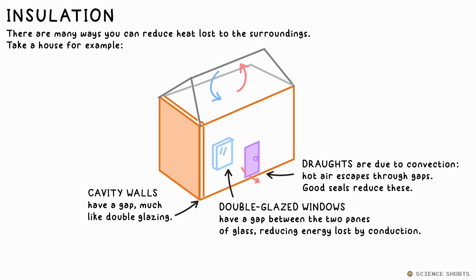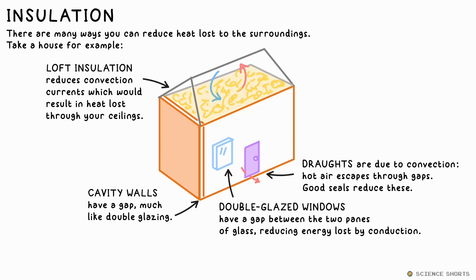Also, convection currents in your loft are a biggie. Air heated by the ceiling rises up to heat the roof, then the surroundings. Insulation, however, massively reduces this flow of air. You can also fill your cavity walls with foam to stop convection currents circulating inside them.